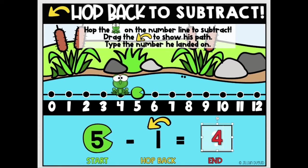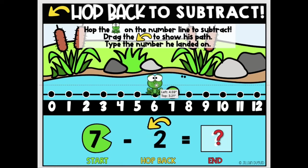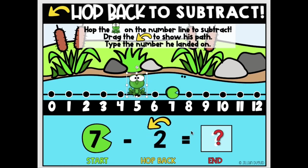We're going to drag the yellow arrows to show the frog's path. Let's try one more. 7 minus 2: 1, 2 is 5. I'm going to drag the arrows to show his path.